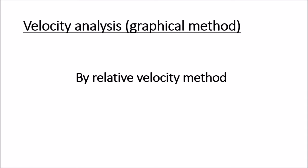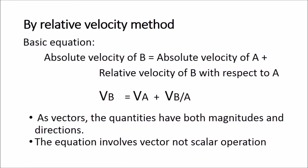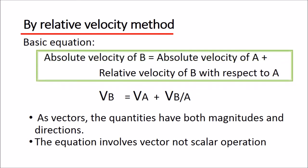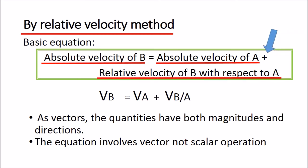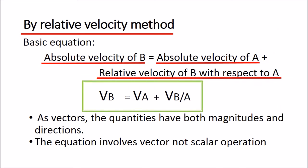Velocity analysis by graphical method will be explained here using the relative velocity method. By the relative velocity method, it follows this equation: the absolute velocity of B is equal to the absolute velocity of A plus the relative velocity of B with respect to A. We understand that these are vector quantities, so they both have magnitudes and directions, and we are performing vector addition, not a scalar operation.